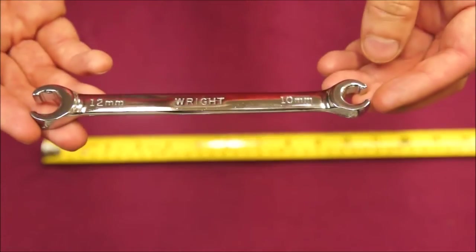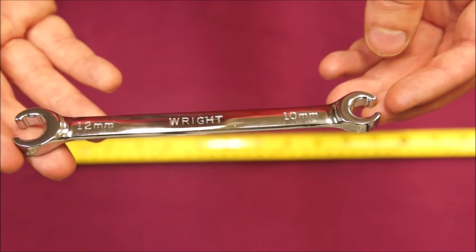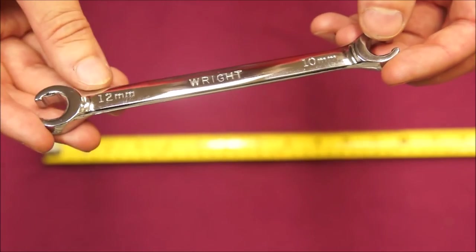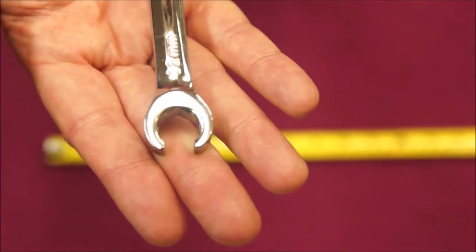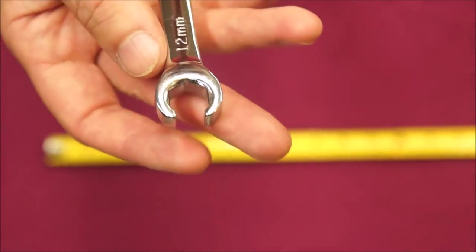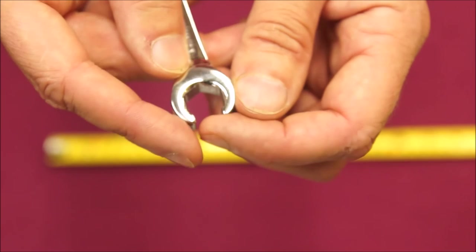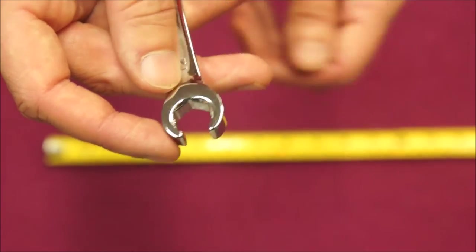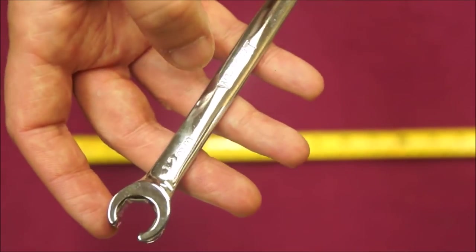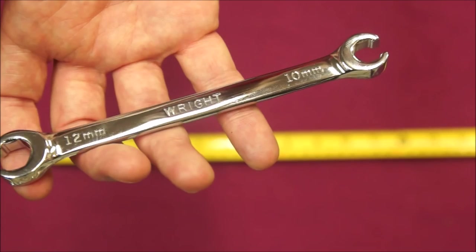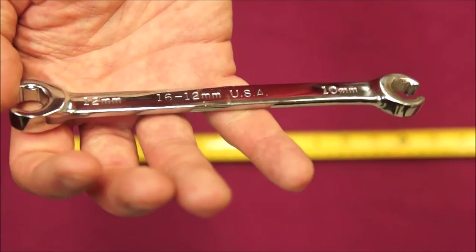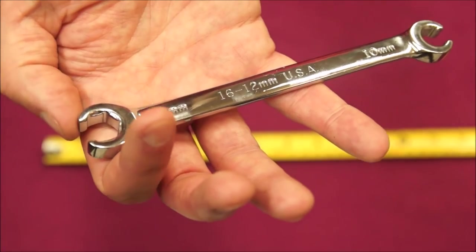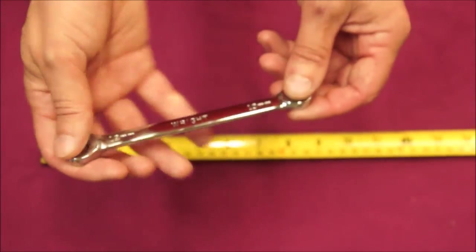Next we have a Wright Tool flare nut wrench. Again this is double-sided, you got 10 mil here and 12 mil on this side. Nice thick head, because your main problem when you buy the cheap ones is the spreading of your jaws here. I've never had that happen with these Wrights, but then I haven't used them all that often either. Again manufactured in the USA.